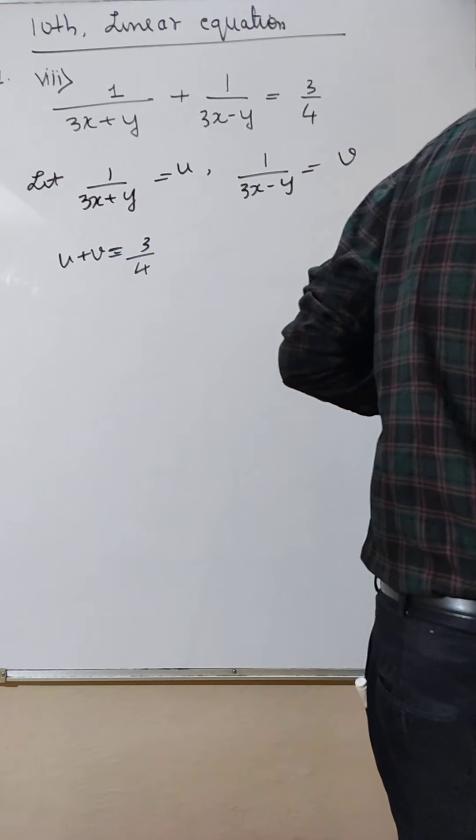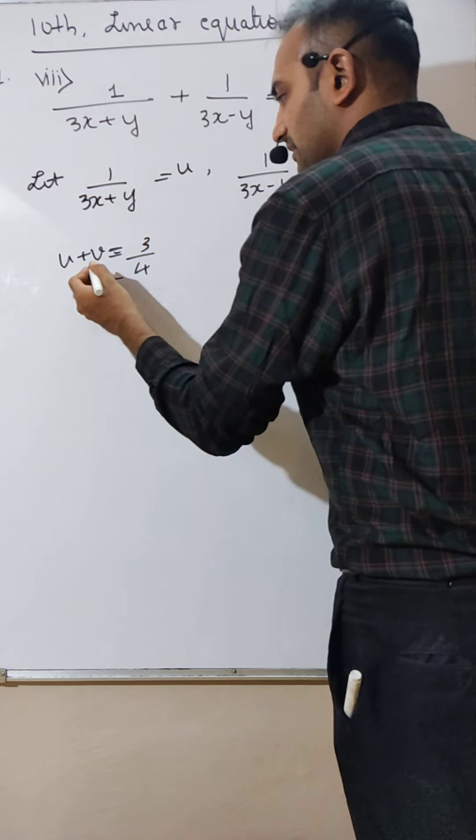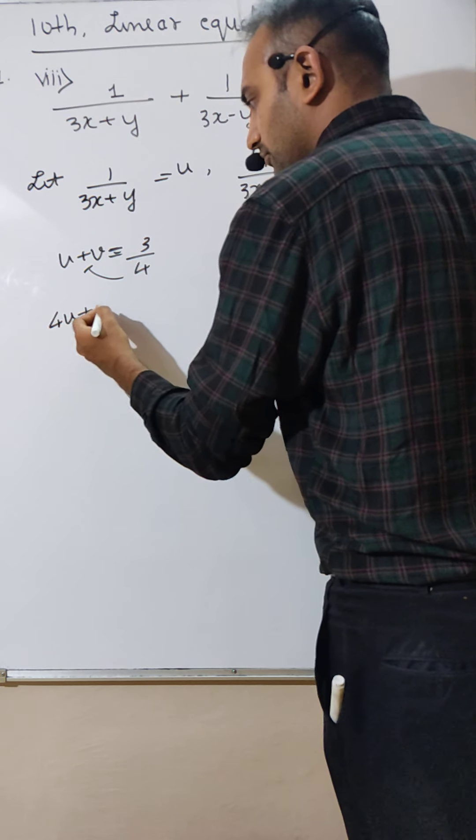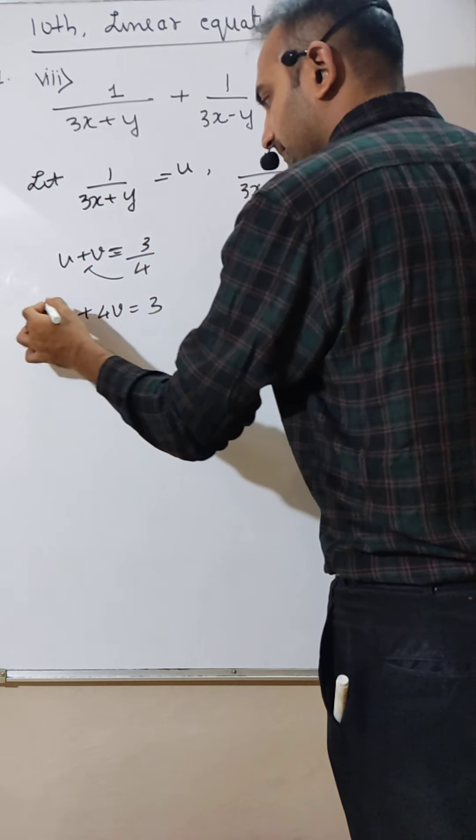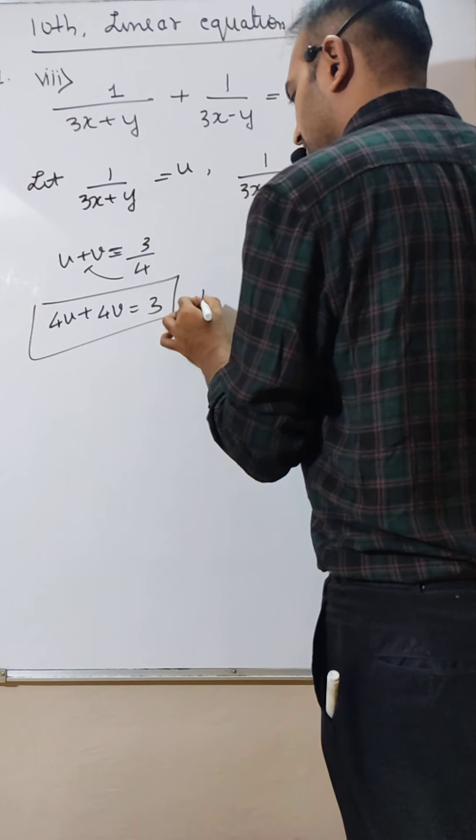Let 1 divided by 3x plus y be u, and 1 divided by 3x minus y be v. So you can write u plus v is 3 by 4. Cross multiply: 4u plus 4v is 3. That's equation number 1.